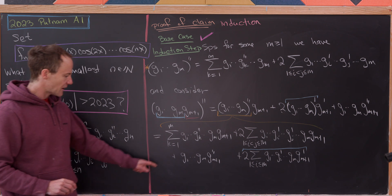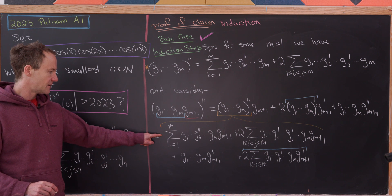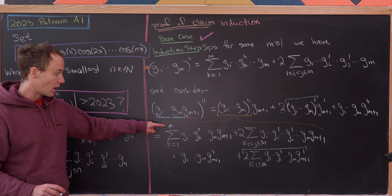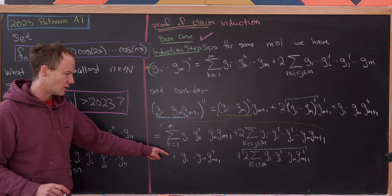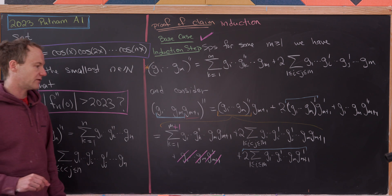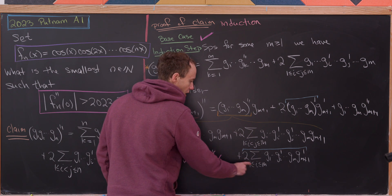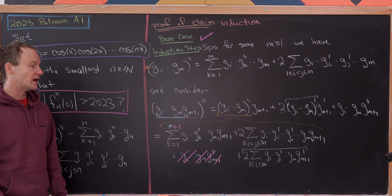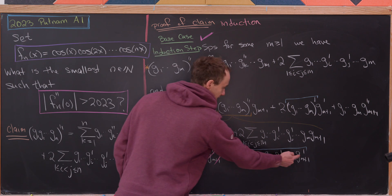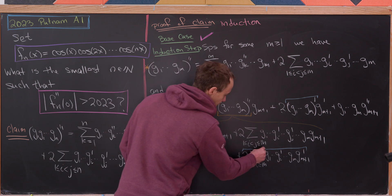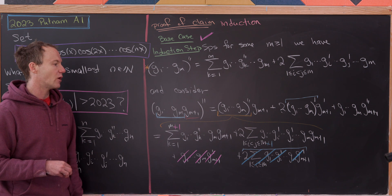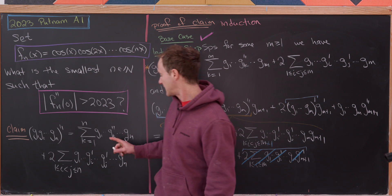Now observe that the last term — g1 through gm times gm+1 double prime — can be absorbed into the sum above by changing the ending index from m to m+1. Similarly, all the blue overline terms can be absorbed into the cross-term sum by changing that top index to m+1, since the only thing missing is a single derivative on gm+1. If you look at that closely, that's exactly what we needed to finish the proof by induction. So the claim is proven.